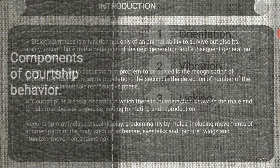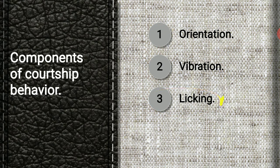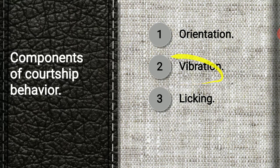Now we move on to the components of courtship behavior. Courtship behavior involves three important components. First one is orientation, second is vibration, third is licking. Orientation is the first component where the male follows the female. Vibration involves the rubbing of wings, antennae, and legs of the insect to produce sounds. Licking involves the licking of the female abdomen by the male.